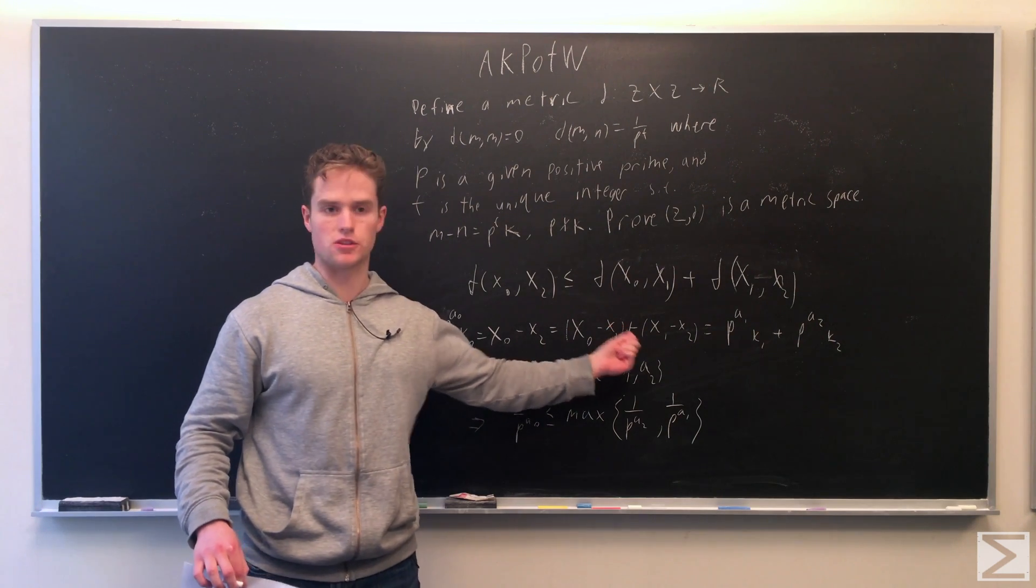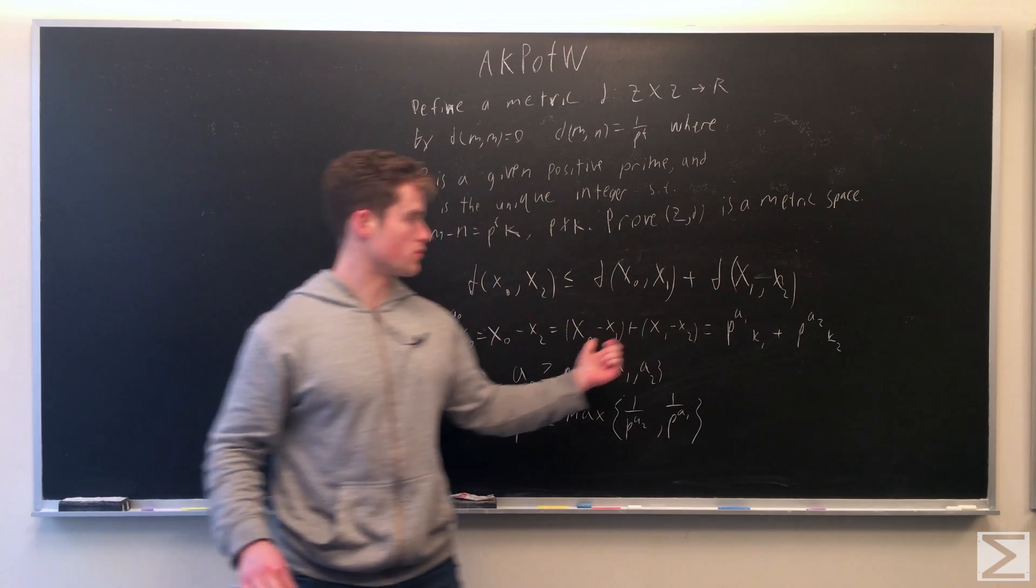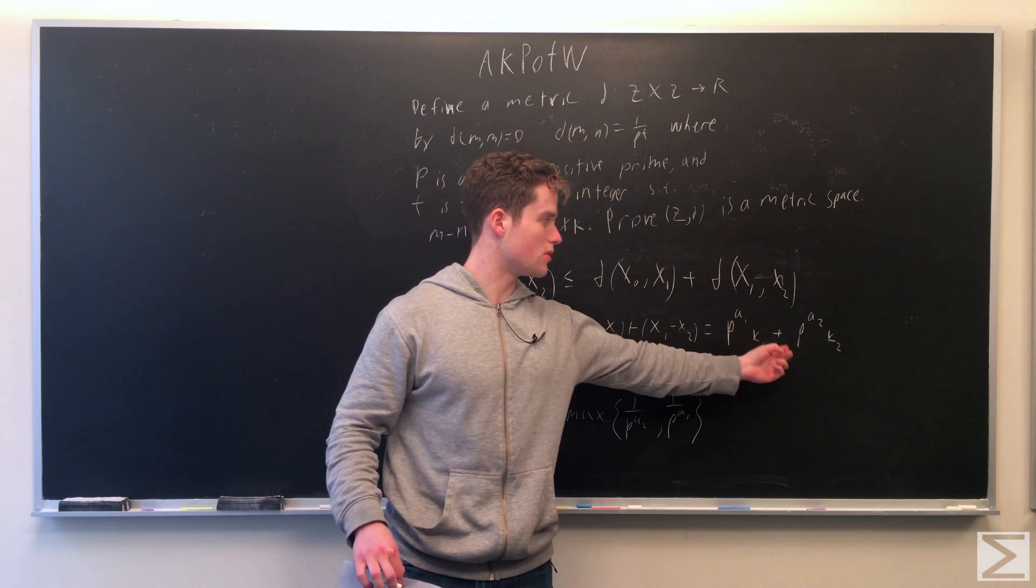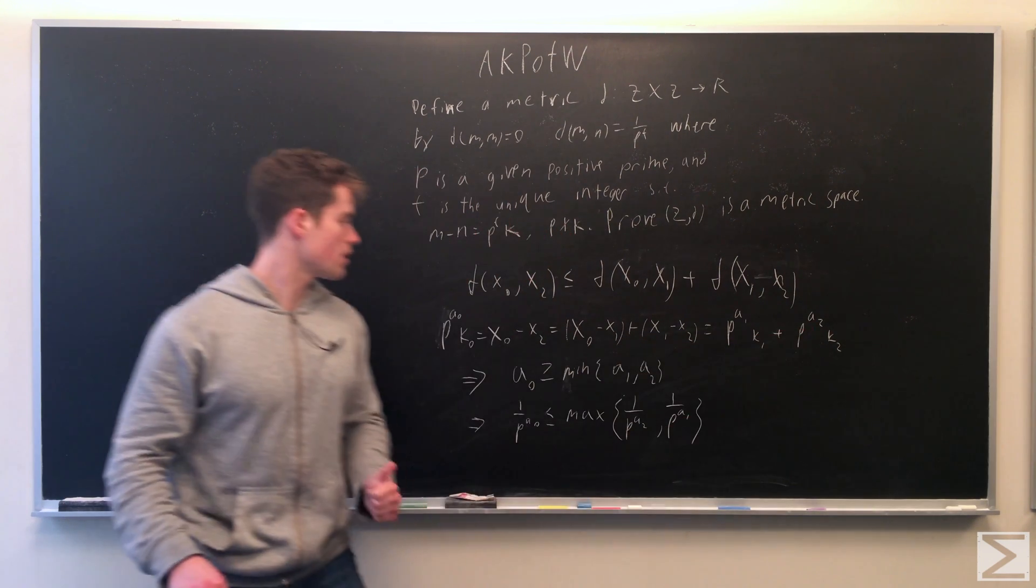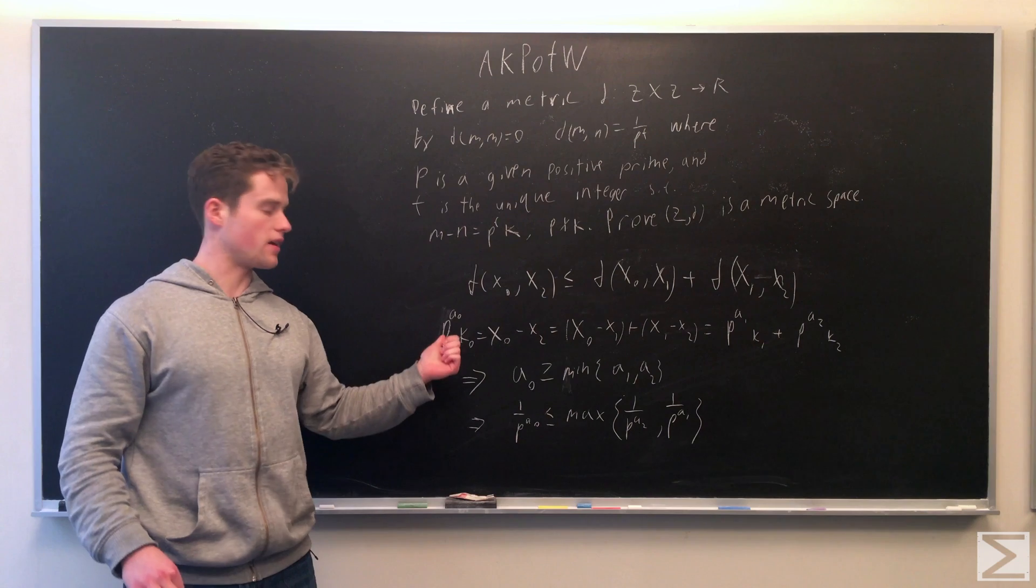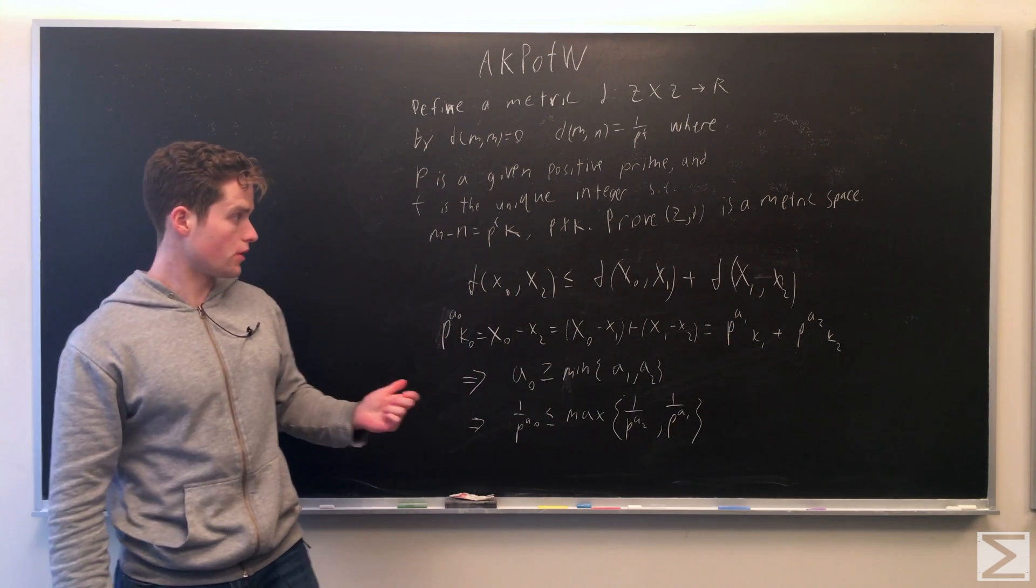If we look at x0 minus x2, we can write this as x0 minus x1 plus x1 minus x2, which we can write as p to the a1 times k1 plus p to the a2 times k2. And this thing is also equal to p to the a0 times k0.